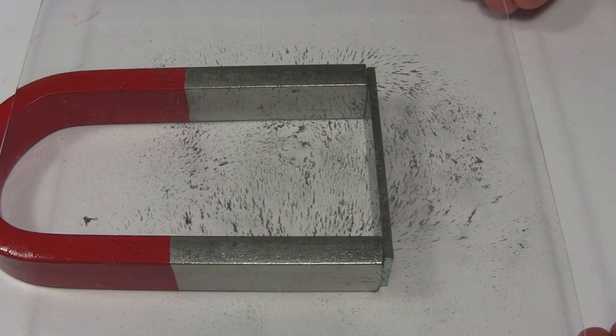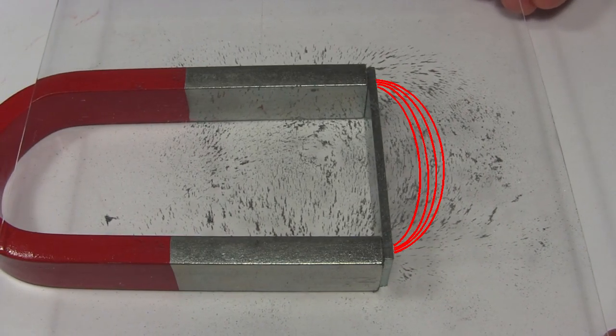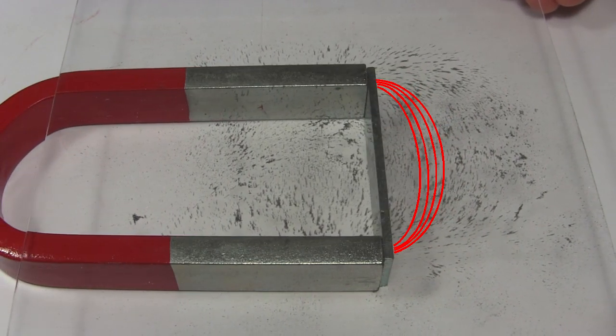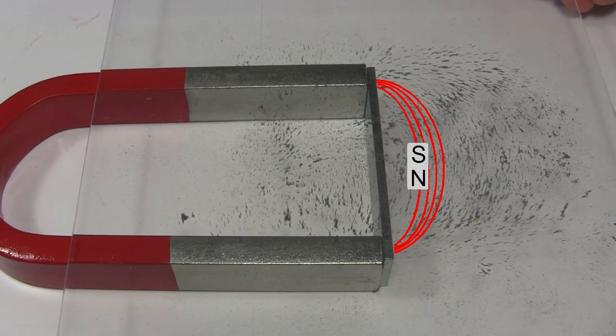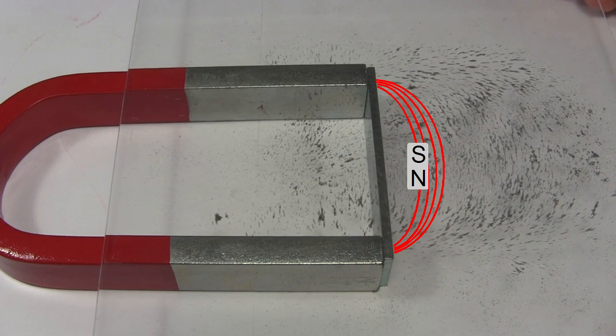Here I'm moving the plexiglass with the iron filings on top of it. Notice how the filings form curved lines at the end of the magnet. That's because the filings act like little magnets themselves. They line up based on the magnetic field of the horseshoe magnet.